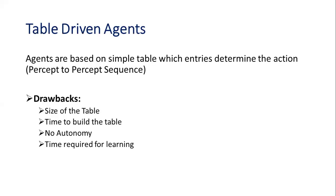The first type we call a table-driven agent. This is a very basic agent structure where you have all the percept sequences. For each and every percept sequence, we have an action to be performed. So it is like, given these conditions, you have to perform this action — nothing more than that. We have a table with all the sequence of percepts mapped to an action to be performed.